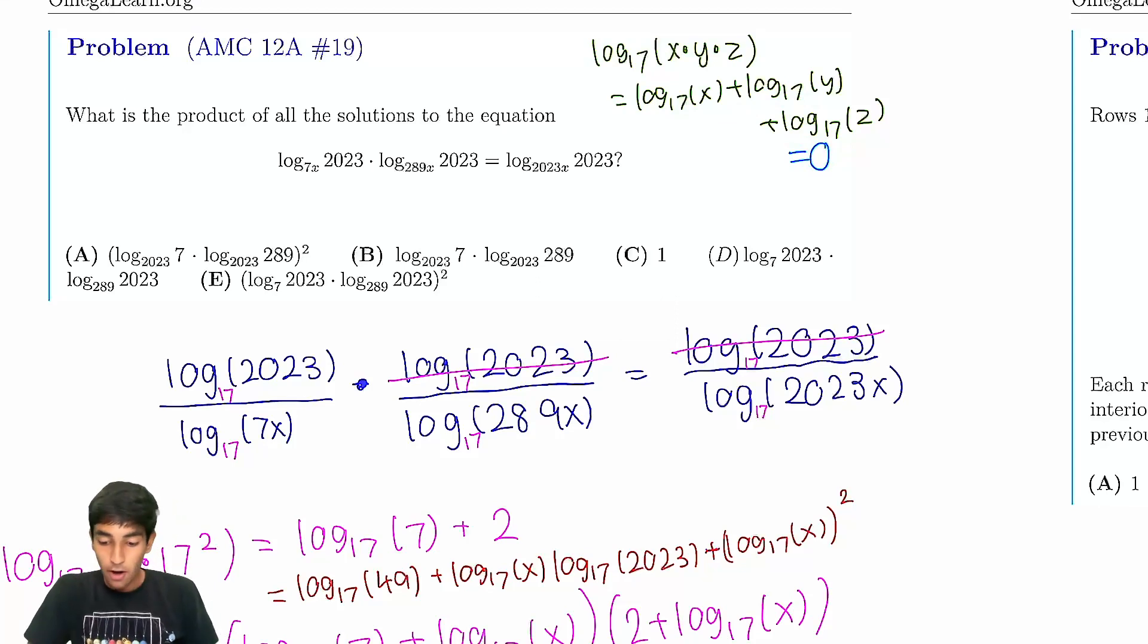And then now we just take 17 to the power of both sides to find the product of these roots itself, not the log₁₇ roots. So we get xyz is 17⁰, which is just 1. So they gave all these random answer choices, log₂₀₂₃(7) times log₂₀₂₃(289), and the answer is just 1. This is funny answer choices that they have provided here.